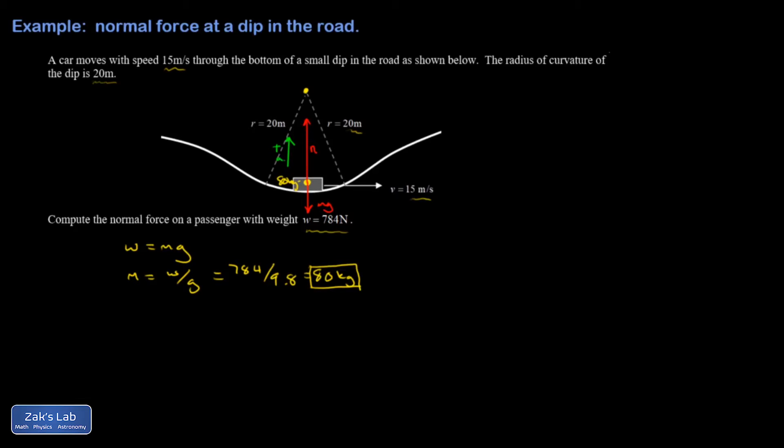Then I can get into applying Newton's second law. F net in the y direction is equal to m times a in the y direction, looking at the y analysis of this person. I have my net force n minus mg, and then the y acceleration is V squared over R.